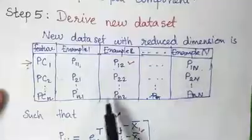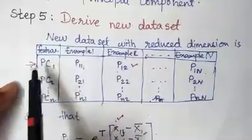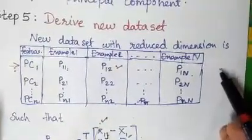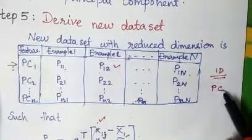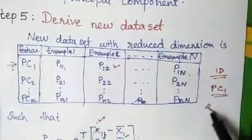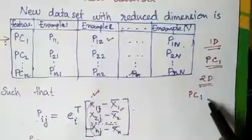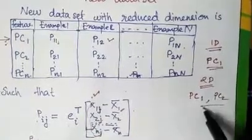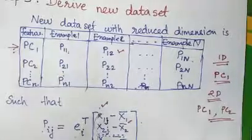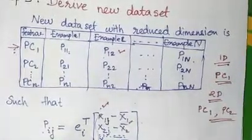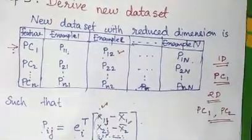Finally we get the reduced-dimension dataset by considering only the first principal component. That's all about principal component analysis. If you understood this topic, please like and subscribe — thank you.